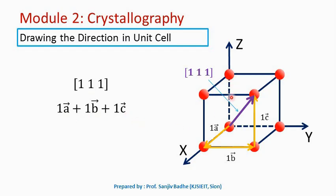First, we will draw the unit cell. In that unit cell, we will select the axis system. All the components of this vector are positive, so we can select this as origin. This will become the positive x-axis, this will be the positive y-axis, and this will be the positive z-axis. Now we will draw the resultant vector — the resultant addition of 1 a-bar plus 1 b-bar plus 1 c-bar starting from the origin.